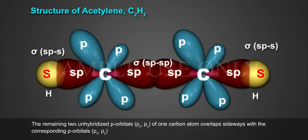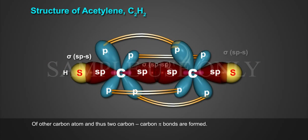The remaining two unhybridized p orbitals px, py of one carbon atom overlap sideways with the corresponding p orbitals px, py of other carbon atom and thus two carbon-carbon pi bonds are formed.